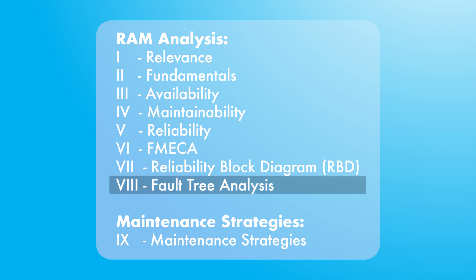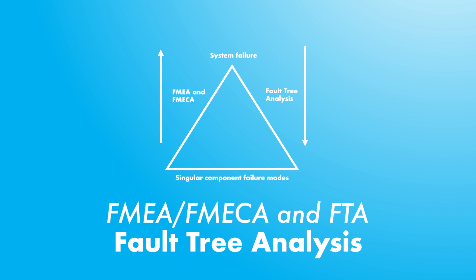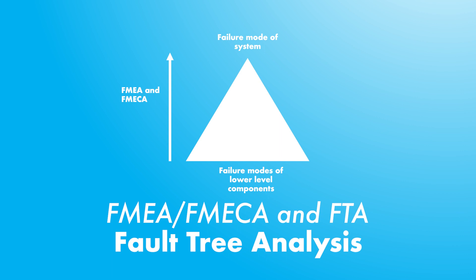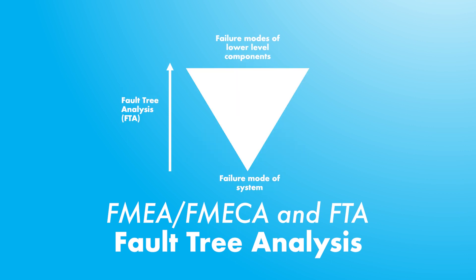Let us now talk about fault tree analysis (FTA) and the difference between FTA and the methodologies of FMEA and FMECA. FMEA and FMECA are used for finding all possible failure modes — they look at failures of components and search for their effects on the system, making them a bottom-up approach. They are efficient but have the drawback that they try to discover all sources of failure, even if only a few have severe consequences. Also, they are rather qualitative, even when criticality calculations are made.